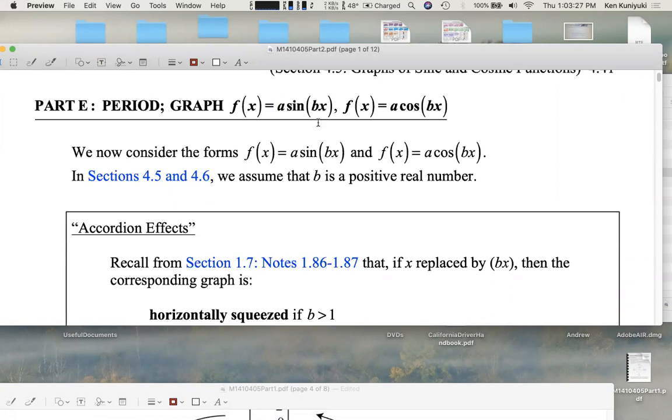We're substituting. These are substitutions. We're substituting x with bx. How do we graph y equals a sine or cosine of bx? Again, these involve substitutions. Subbing x to bx. Well, let's experiment.